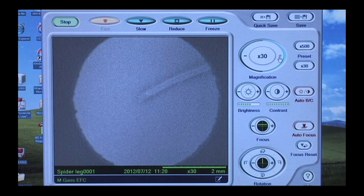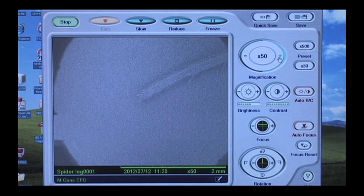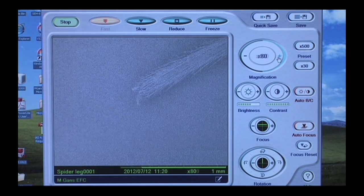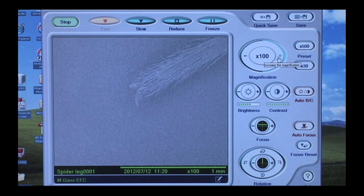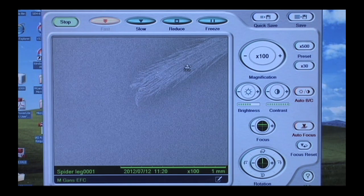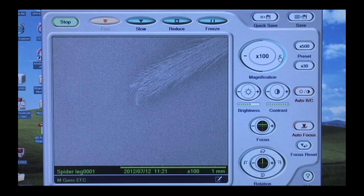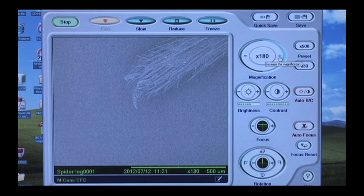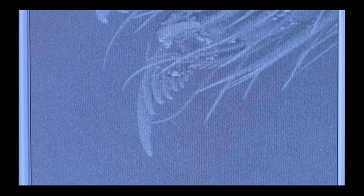Let's go ahead and start magnifying. 40x, 50, 60, 80, 100. So now we're up to 100. You start to see some fuzziness here. Let's go up a little higher. And what you'll see is at the end of the spider leg is a lovely little claw. So let's move this image down to the center of the screen.